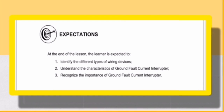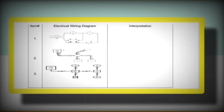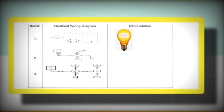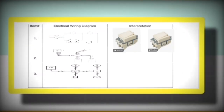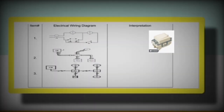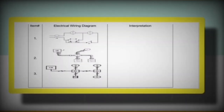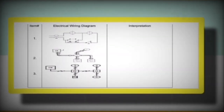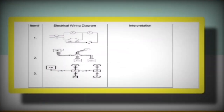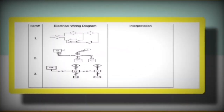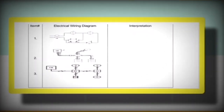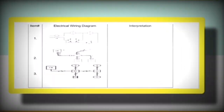Going back to our past lesson about electrical wiring plan: the interpretation of electrical diagram number one is one bulb controlled by two three-way switches and one bulb controlled by one SPST switch. Number two: one bulb controlled by two three-way switches, or one bulb controlled from two different locations. Number three: three bulbs controlled by one SPST switch.